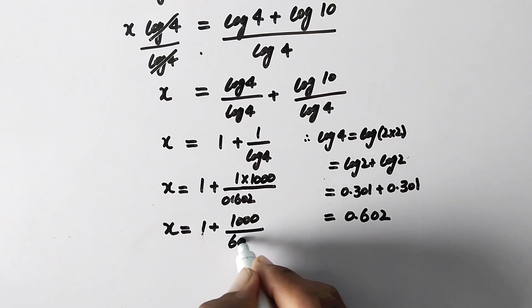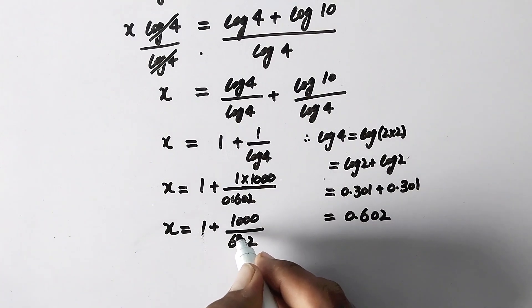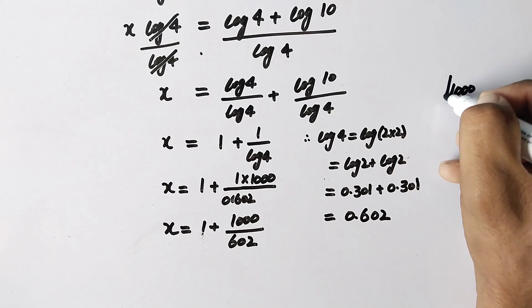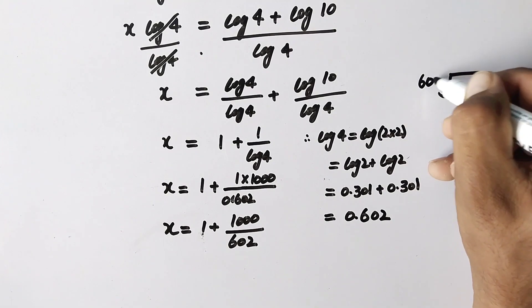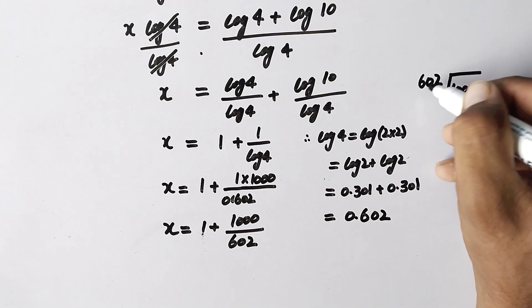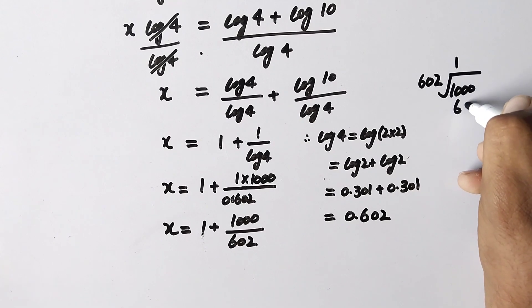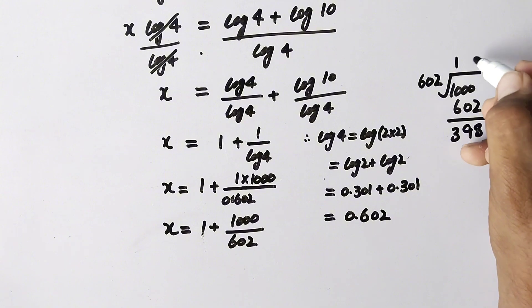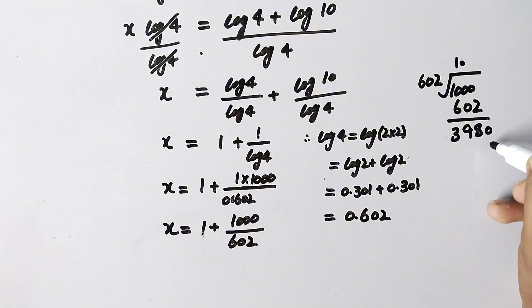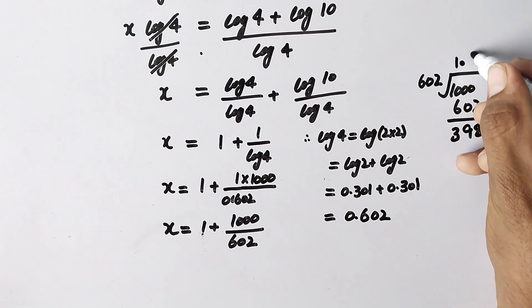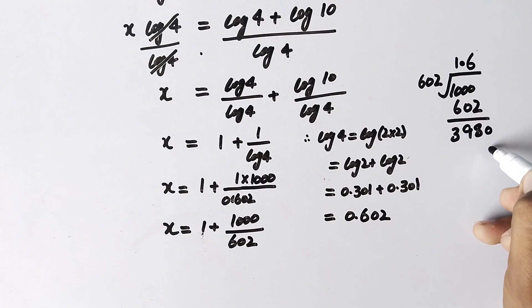And to further simplify it, here we will divide 1000 by 602. So this will go 1 times, so here it will be 602 and here left is 398. Now this value is less than this value, so here we will take decimal point and here will be 0. So now this will go up to 6 times.